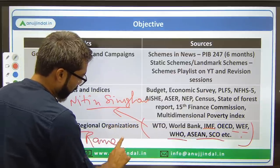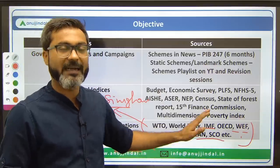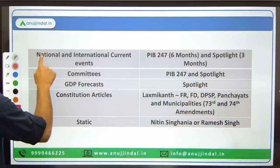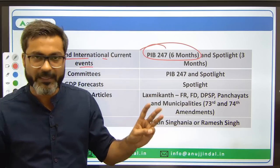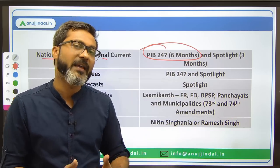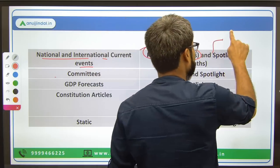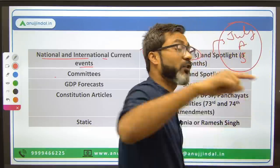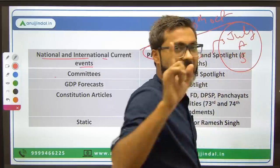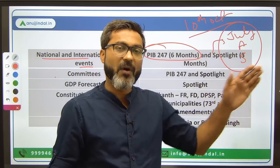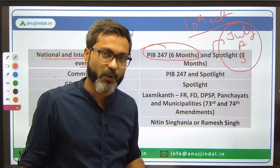Either of the two books — Nitin Singhania or Ramesh Singh — will have the chapter explaining all these organizations. For national and international current events, cover PIB 247 for six months and Spotlight for the last three months. The last three months — July, August, and September — are very important. For October, cover news up to 10th October, because questions are asked even from news released one week before the examination.